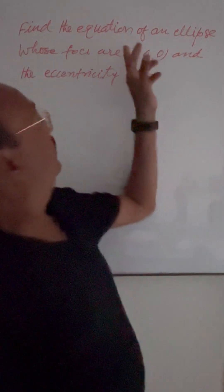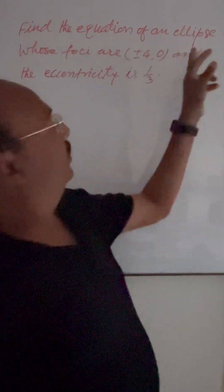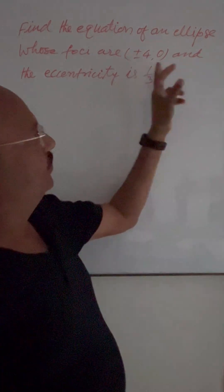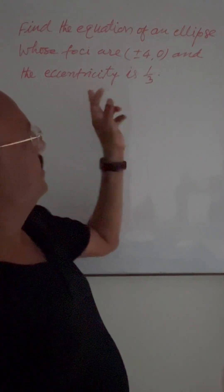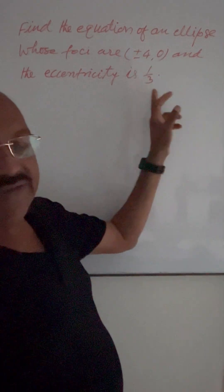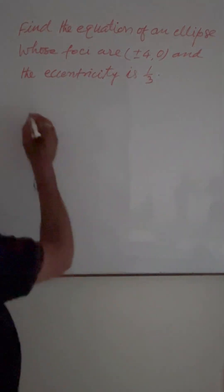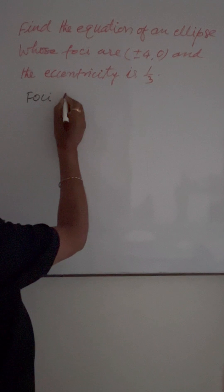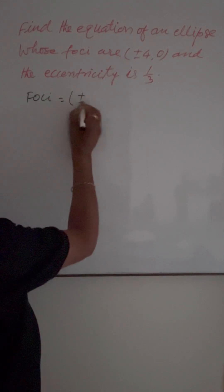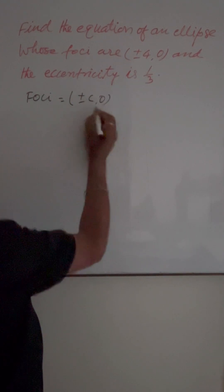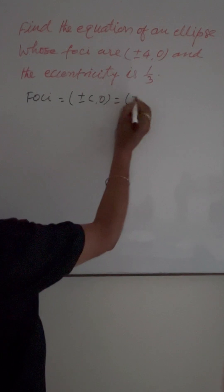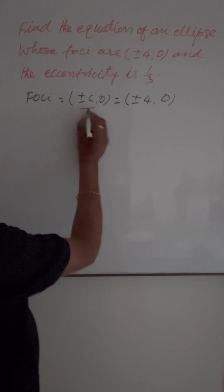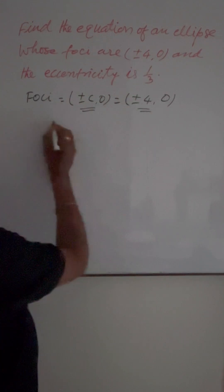The question is: find the equation of an ellipse whose foci are plus minus 4, 0 and the eccentricity is 1 by 3. We know that the coordinates of the foci of an ellipse are plus minus c, 0, which is given here as plus minus 4, 0. So by comparing, we get c is equal to 4.